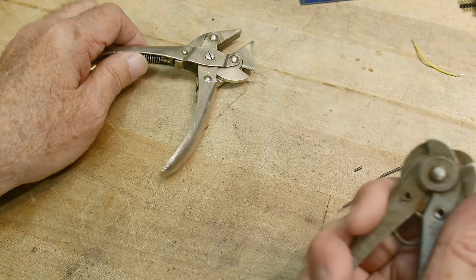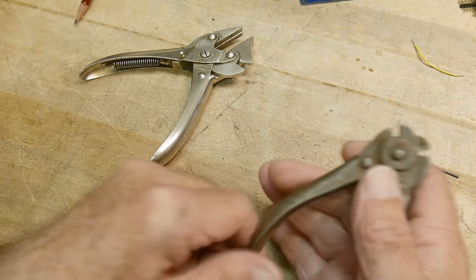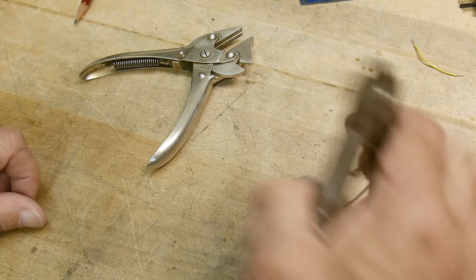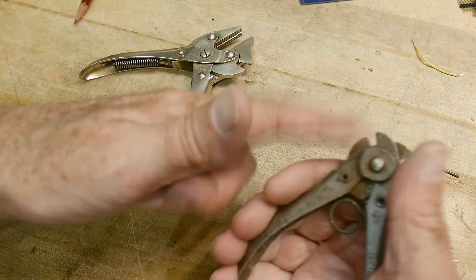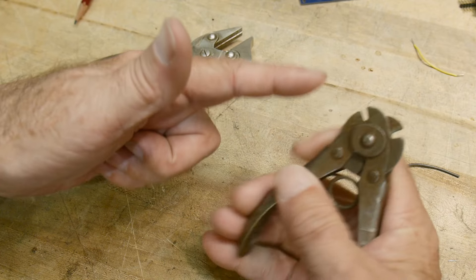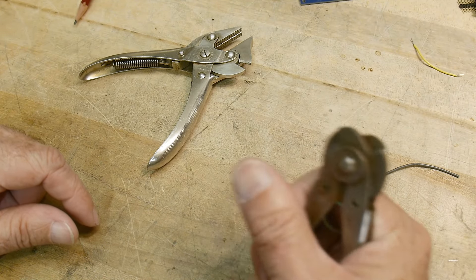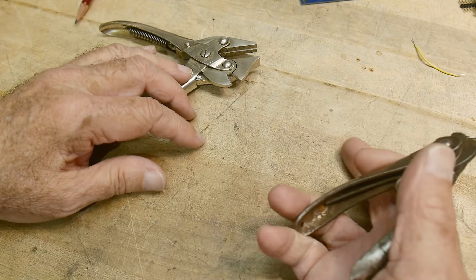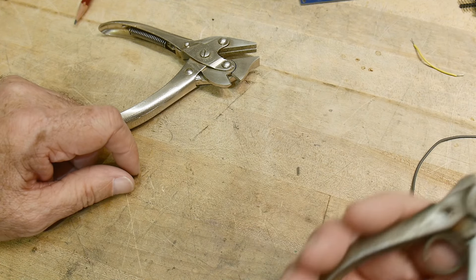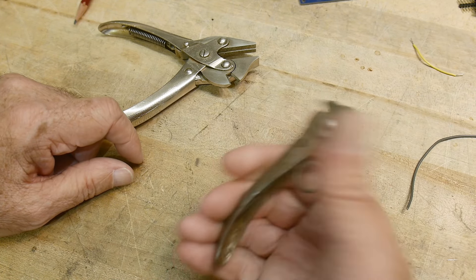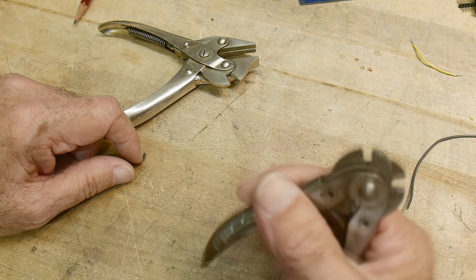When you grab them, it doesn't matter which way you grab them because the cutter is always pointed in exactly the same direction. If you're opening bales of hay or something and you grab your cutter, you don't have to worry about which way you have it.